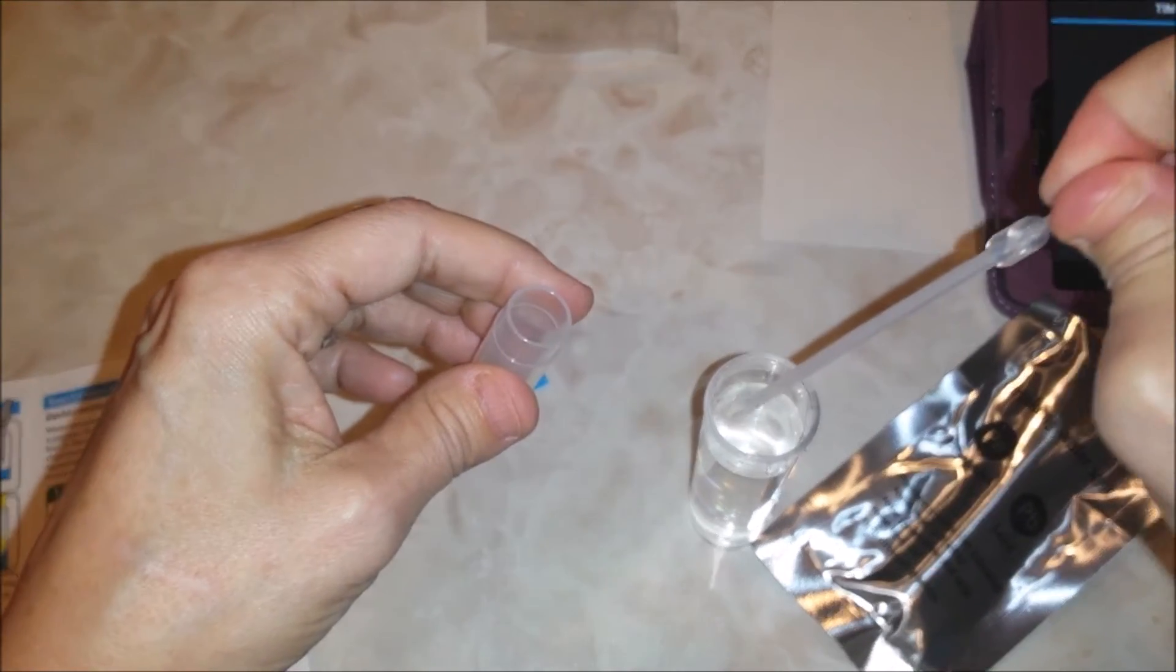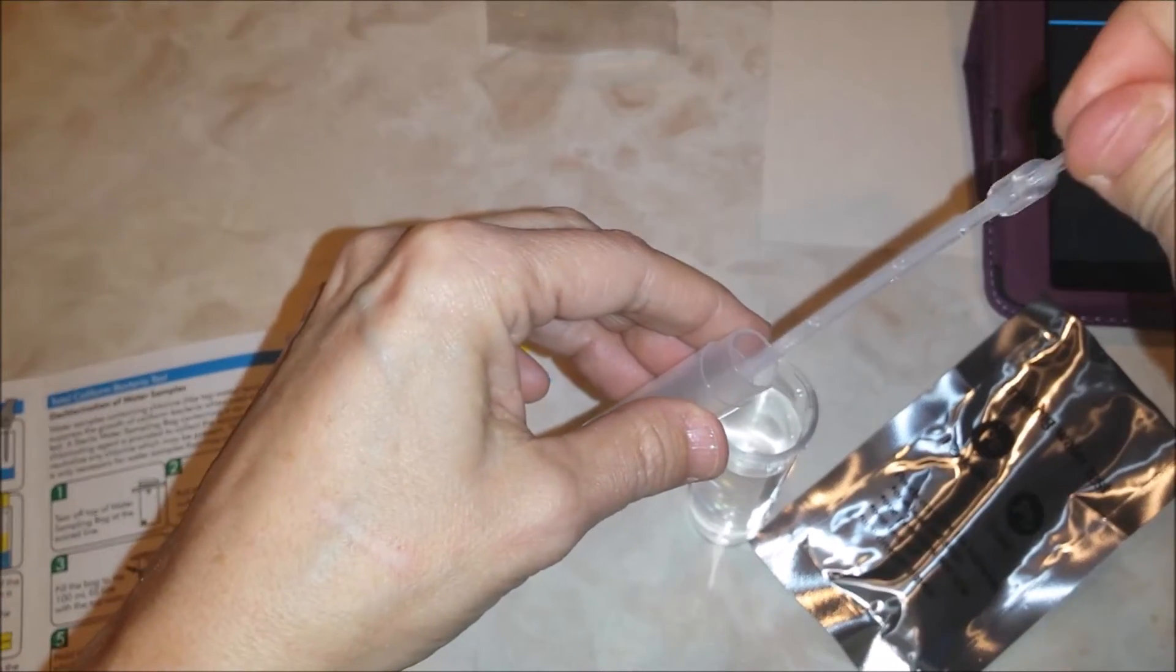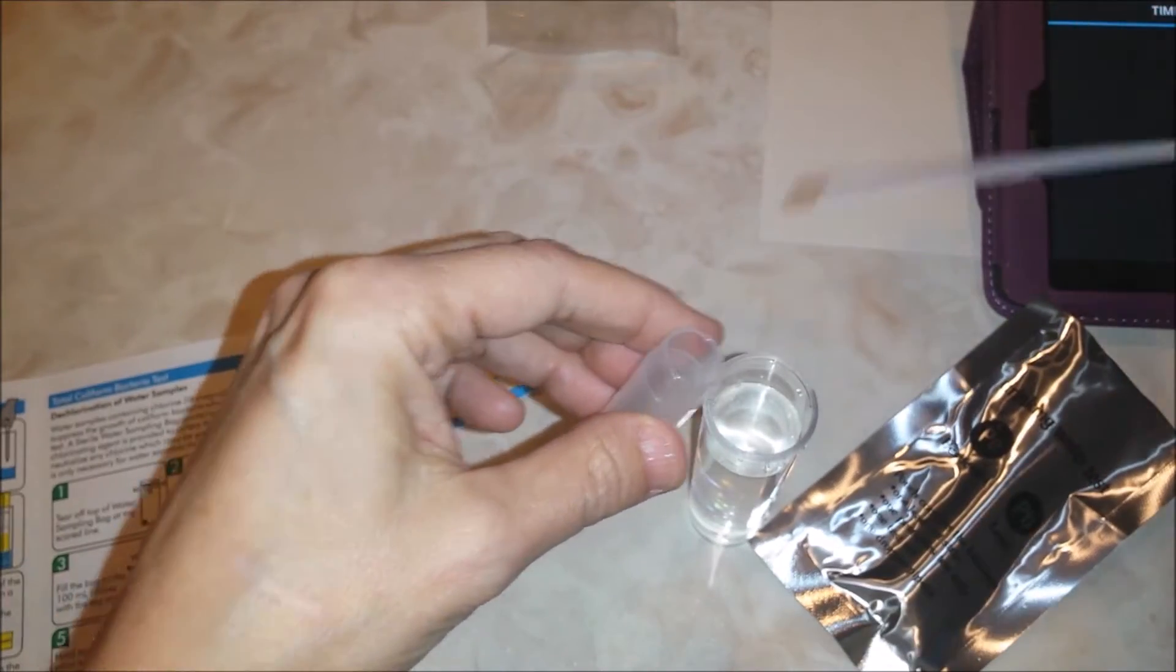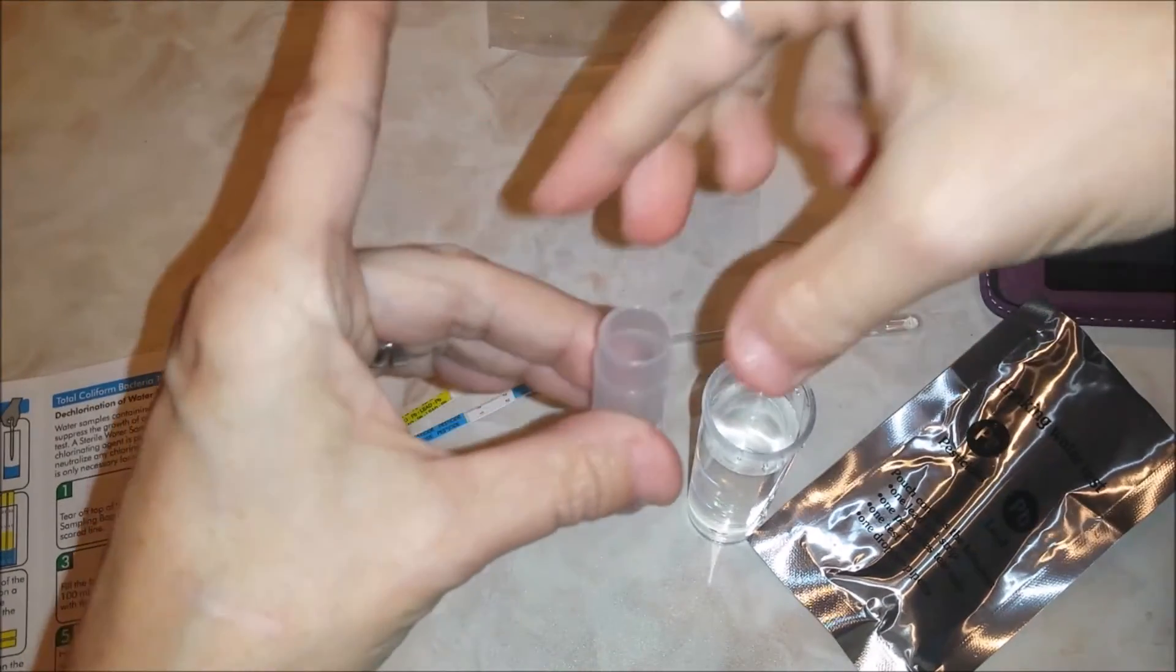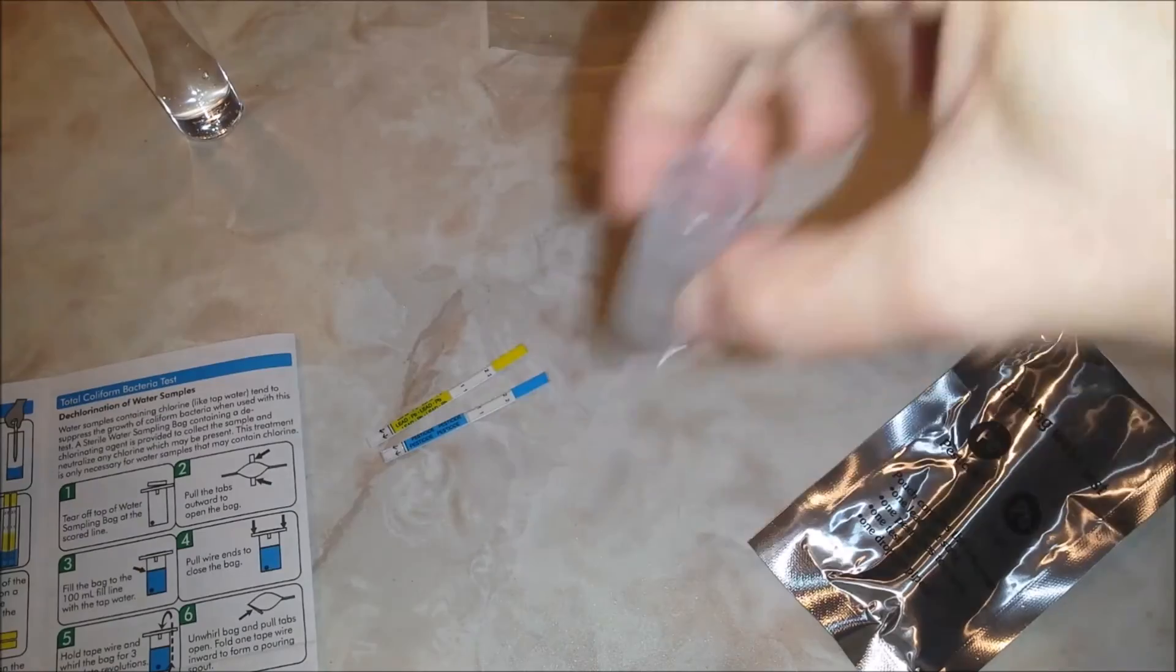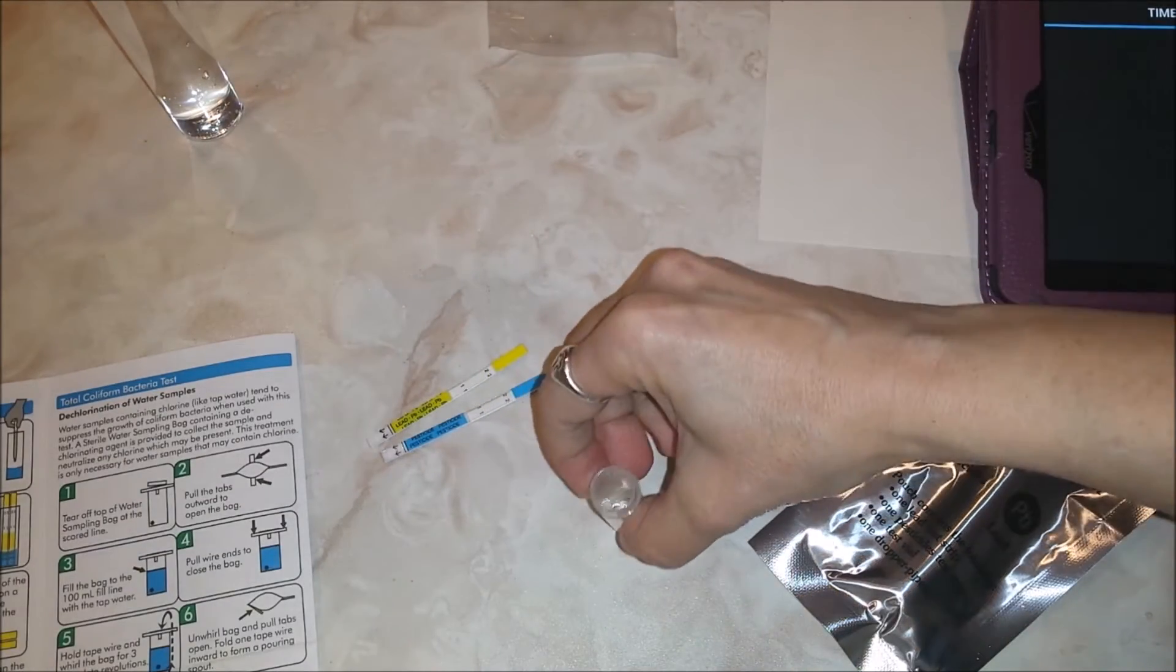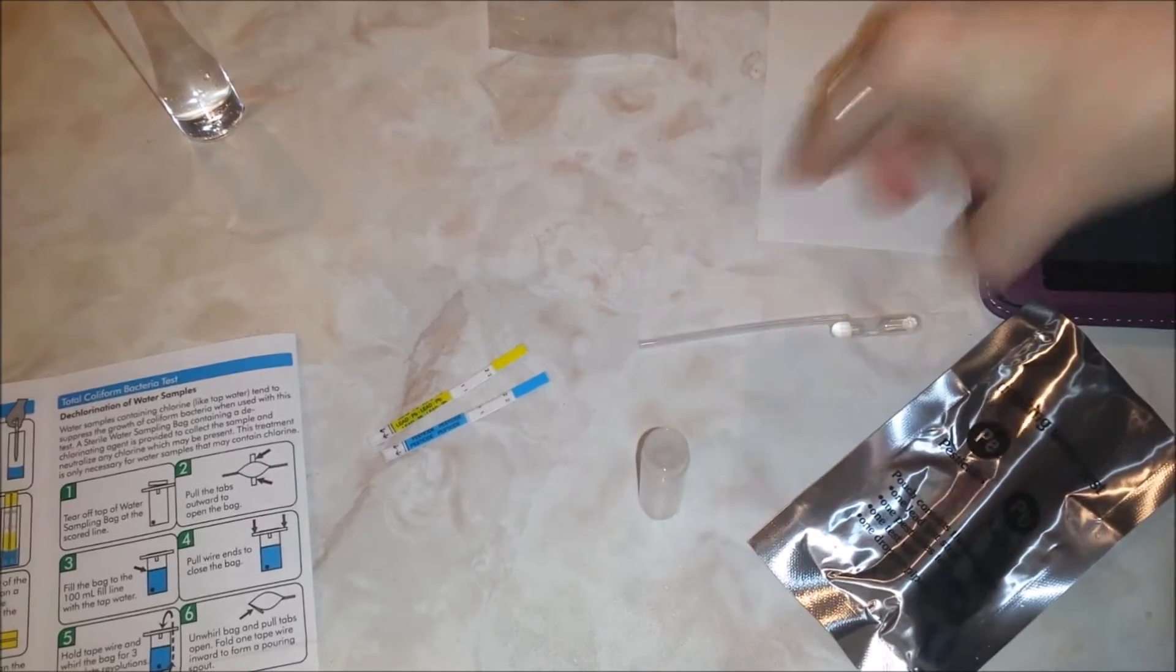We're done with the eyedropper. It says swirl vial gently for several seconds. Okay, several seconds. And then place on a flat surface.